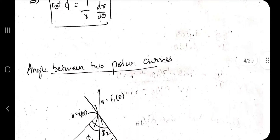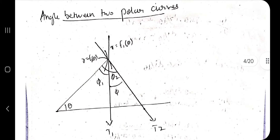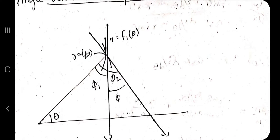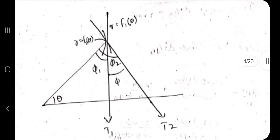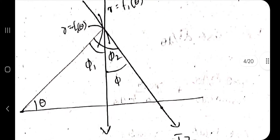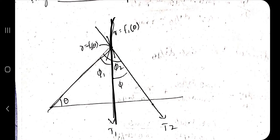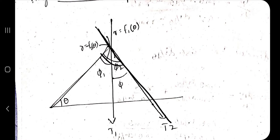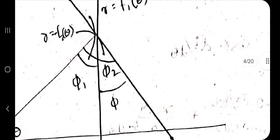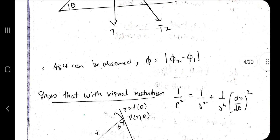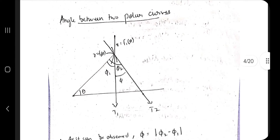Moving to the next concept: the angle between two polar curves. Suppose there are two polar curves represented as r = f₁(θ) and r = f₂(θ). Each has a tangent, T1 and T2. The angle φ₁ is between the radius vector and T1, and φ₂ is between the radius vector and T2. The angle between the two curves is φ = |φ₁ − φ₂|.